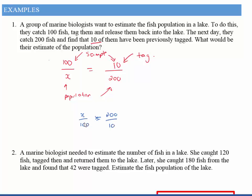And now I've got a simple equation. I can take the 100 to the other side, so x equals 200 times 100 divided by 10.